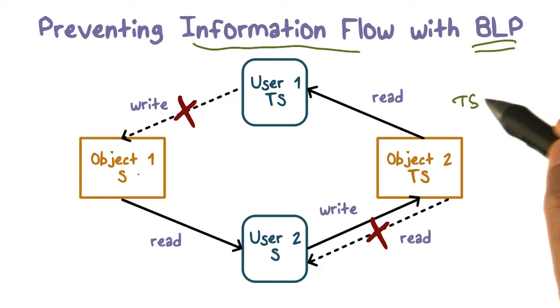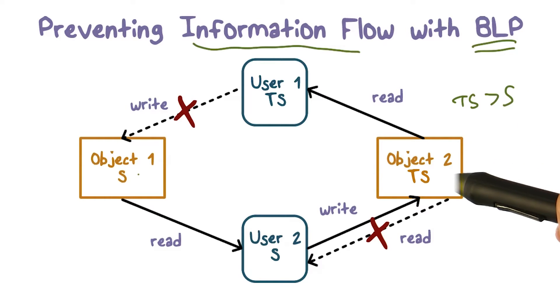So this is more sensitive, object two is more sensitive than object one, because we said TS is greater than S. So this is highly top secret information. We never want it to end up in an object that is only classified at the secret level.